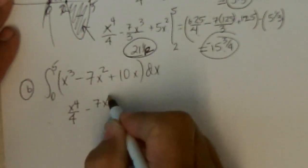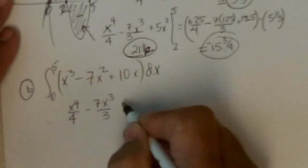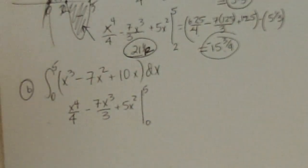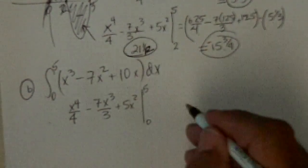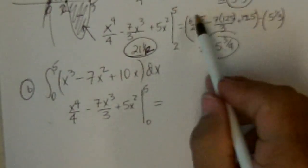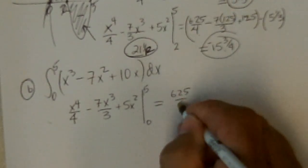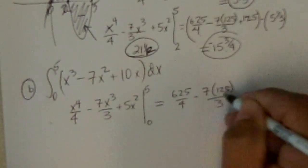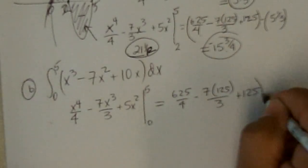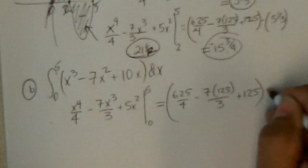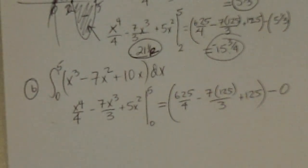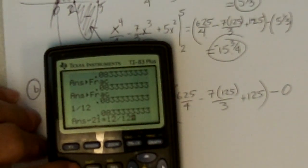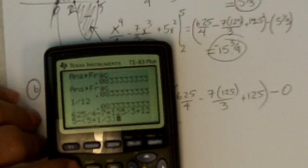Now it says, evaluate this. Well, the anti-derivative is still the same thing. x to the fourth over 4 minus 7x to the third over 3 plus 5x squared. Evaluate it from 0 to 5. Excuse me. So when I put 5 in, I get 625 over 4 minus 7 times 125 over 3 plus 125. And then I got to subtract from that what I get when I put in 0, which is 0.